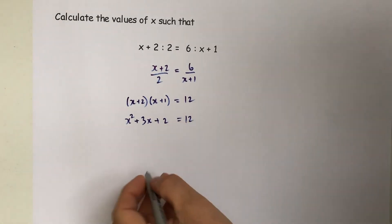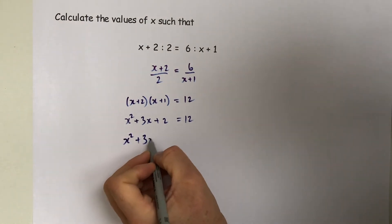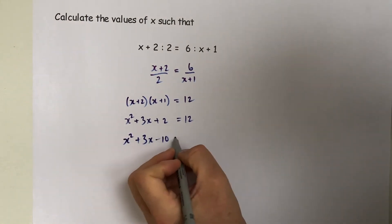So the 12 across the other side is a minus 12, so we get x squared plus 3x minus 10 equals 0.